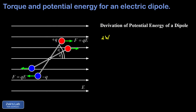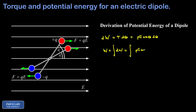We start with an infinitesimal work contribution: just as work equals force times distance, we can write dW = τ dθ (torque through an angle). We just found τ = pE sinθ, so dW = pE sinθ dθ. The total work is the integral from theta one to theta two of pE sinθ dθ, where p and E are both constants.